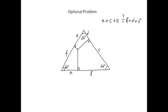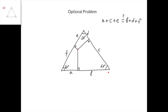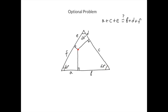Now for the optional problem. We have an equilateral triangle — all angles are 60° — and we choose a random point inside the triangle and drop perpendiculars from that point to the sides, getting six segments a, b, c, d, e, and f. We need to prove that a + c + e = b + d + f.